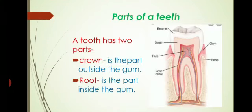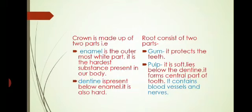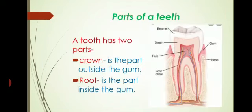Now we come to parts of a tooth. Have a look at the diagram over here. A tooth has two parts. The upper exposed part which is present outside the gum is called crown. Crown is again made up of two parts: enamel and dentine. Enamel is the outermost white part. It is the hardest substance present in our body. And below enamel lies this light colored part which is called dentine. It is also hard.